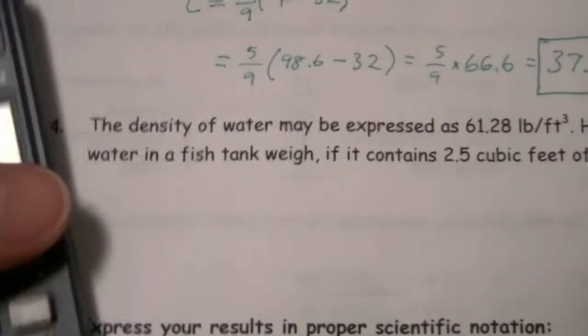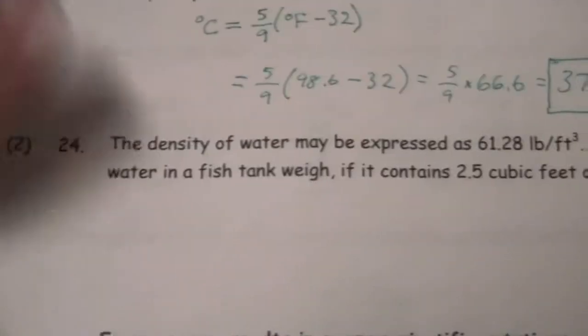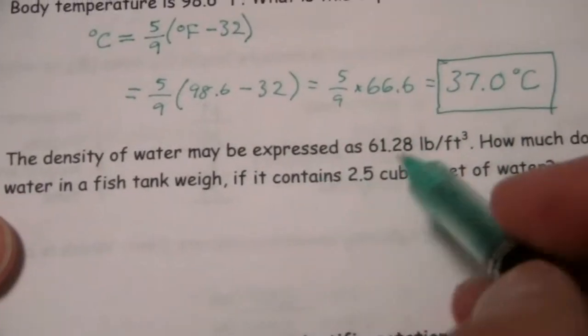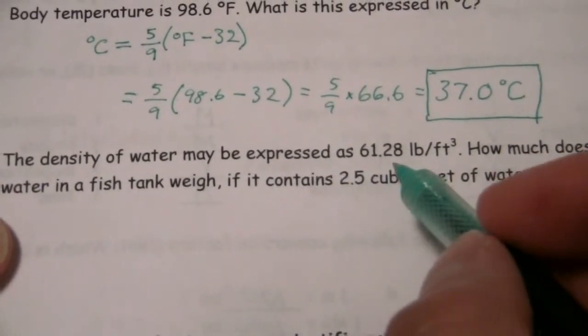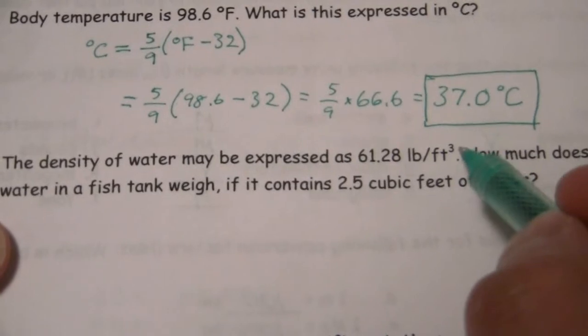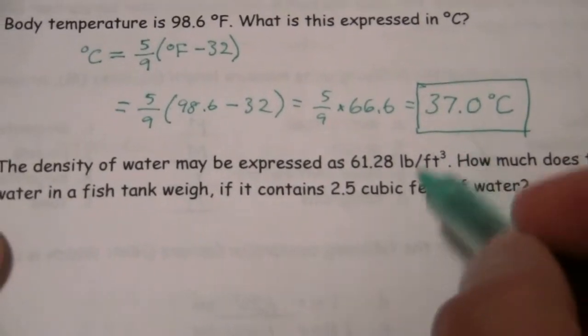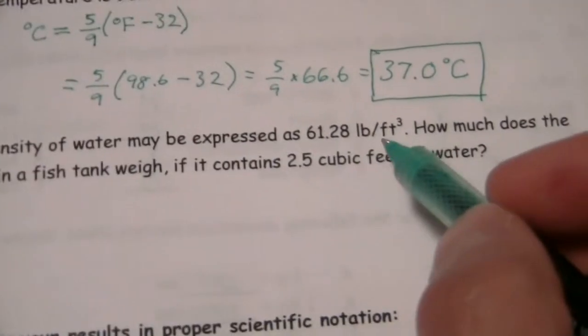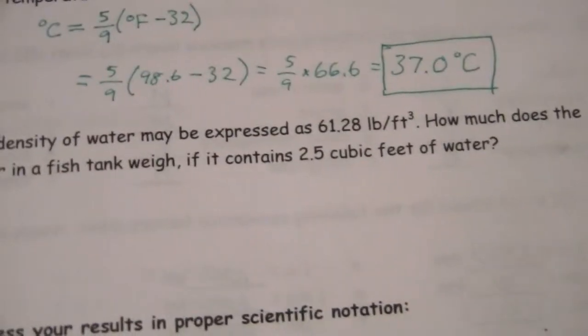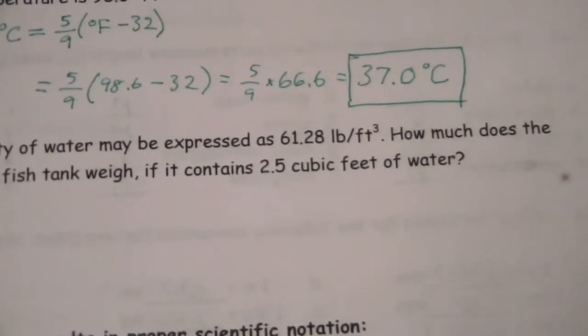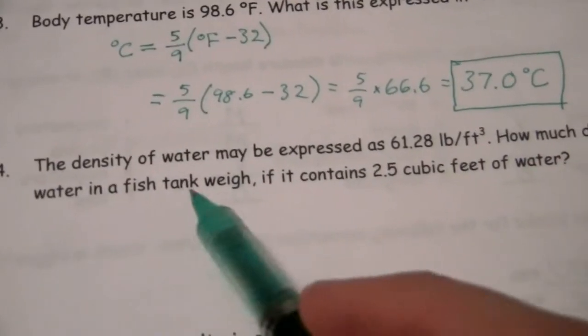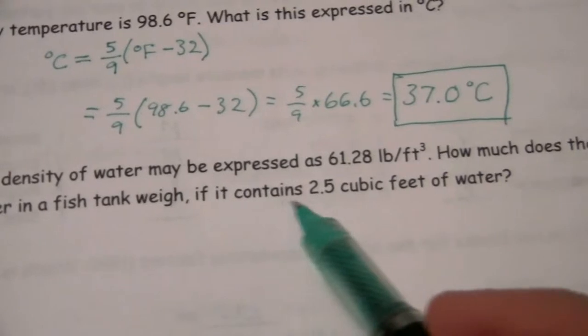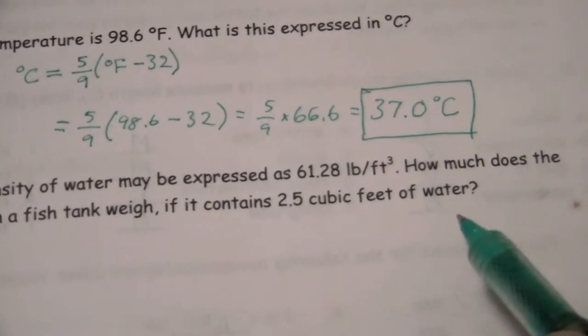So now we have the density of water may be expressed as 61.28 pounds per cubic foot. So if I have a cubic foot of water, it weighs 61.28 pounds. That's how we read those units. So how much does the water in a fish tank weigh if it contains 2.5 cubic feet of water?